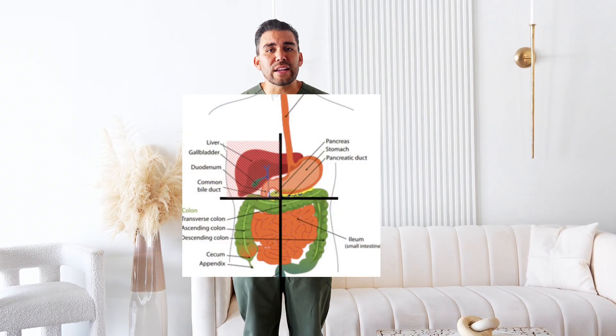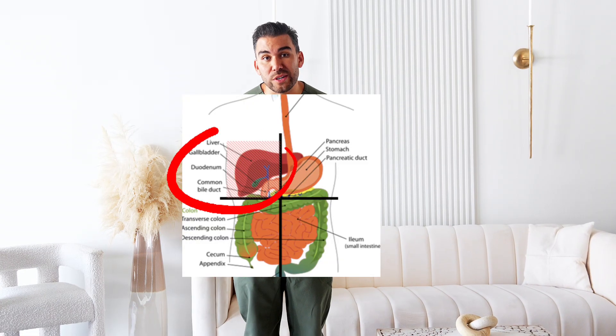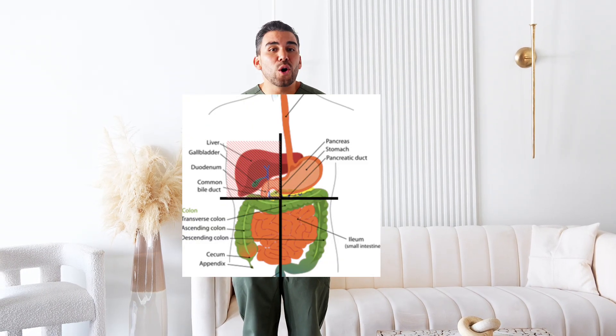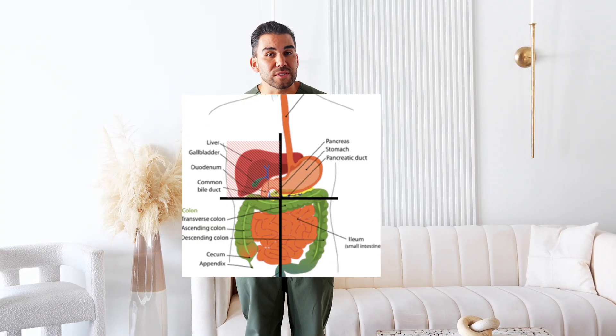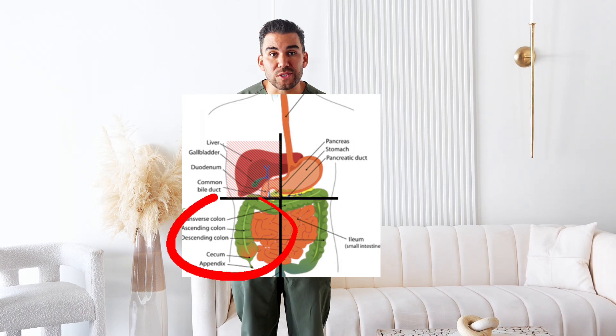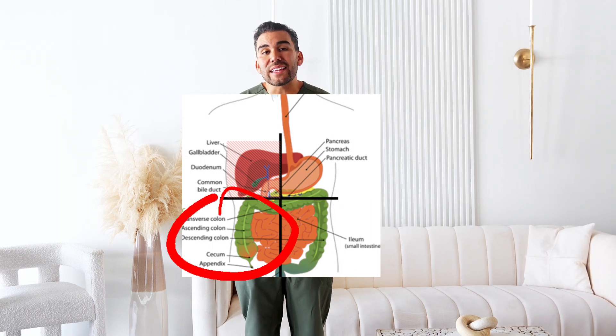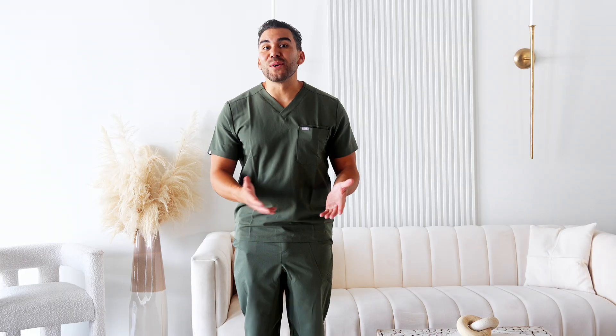Understanding these regions helps in patient assessment. For instance, if a patient is complaining of pain in the right upper quadrant, you might suspect liver or gallbladder issues. And if there's pain in the right lower quadrant, this could indicate appendicitis. This knowledge also guides your physical examination — you'll know exactly where to palpate or auscultate for specific organs or conditions.